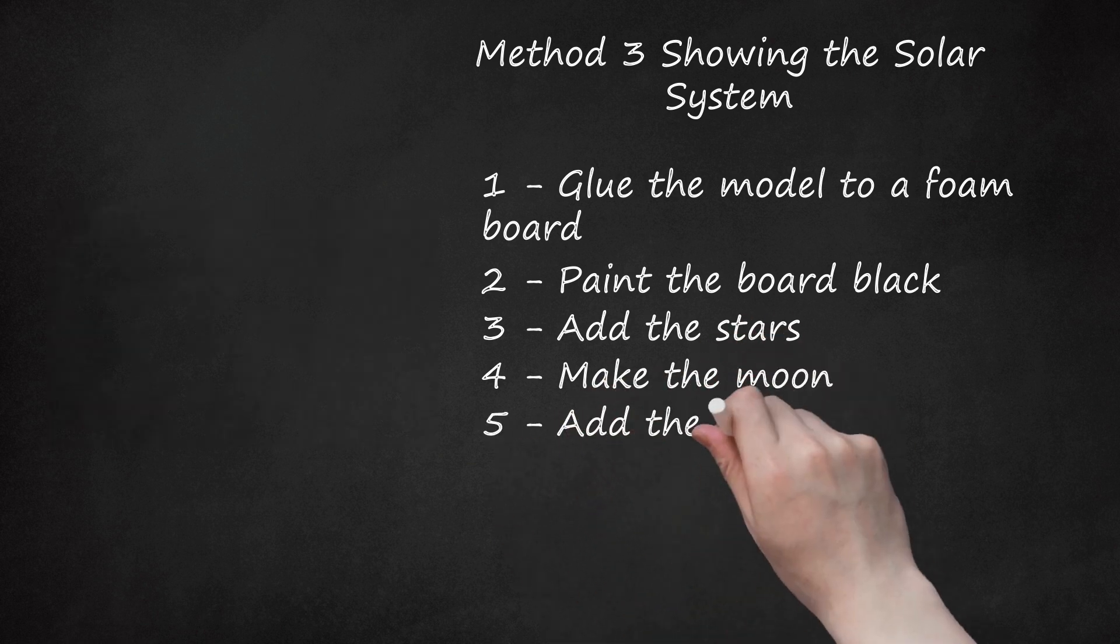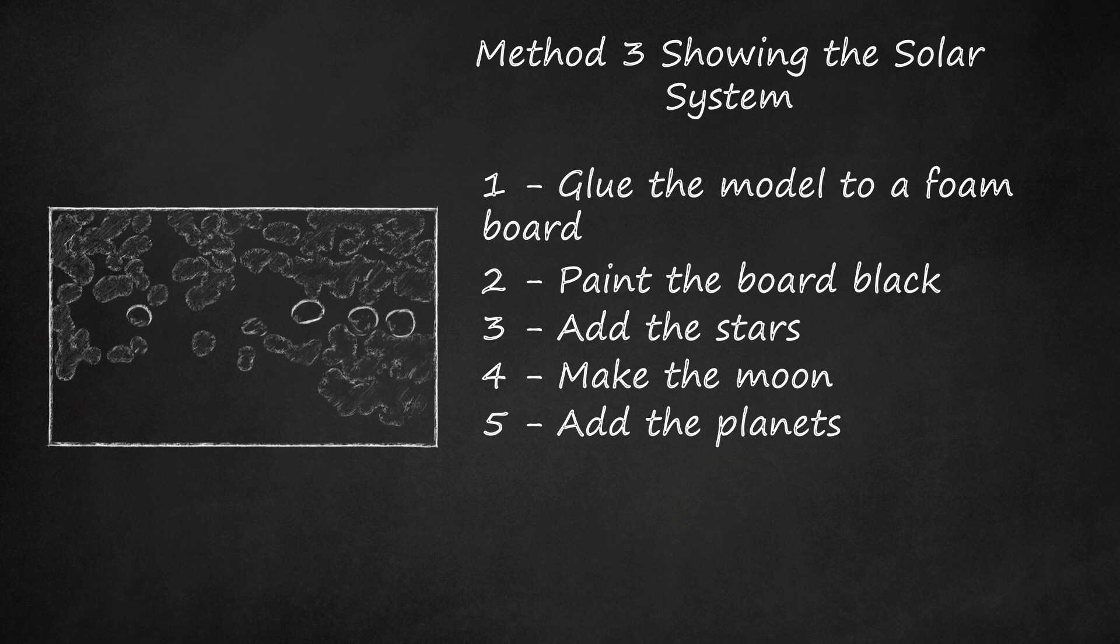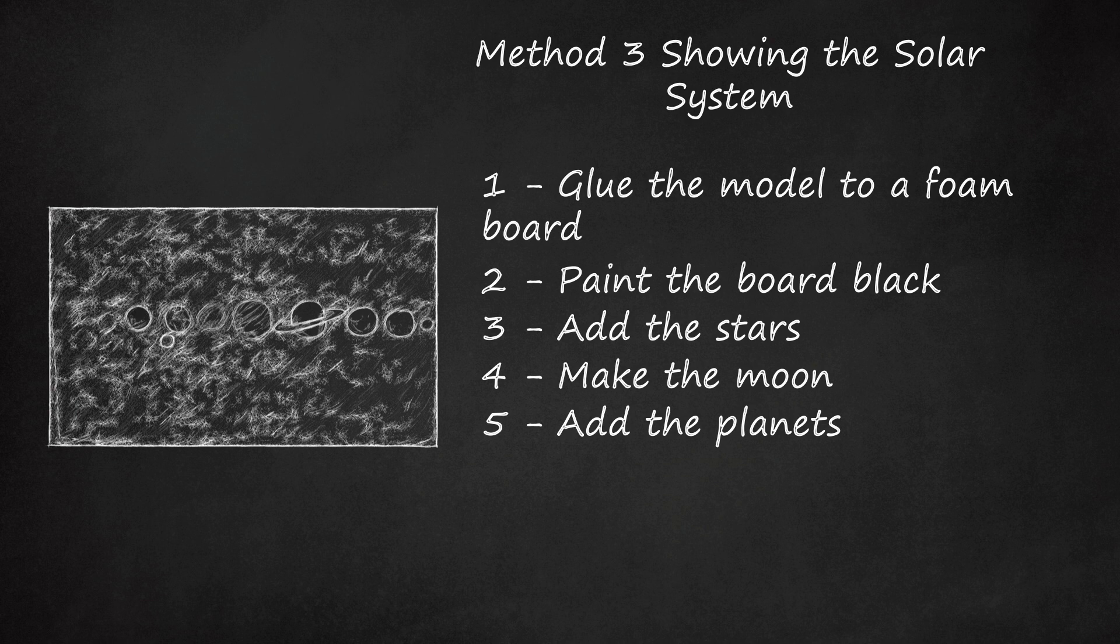Step 5: Add the Planets. Crumple up another piece of paper for each of the planets. Glue them onto the board in this order: Mercury, small, gray. Venus, yellow, about earth-sized. Earth, your model. Mars, red, about earth-sized.